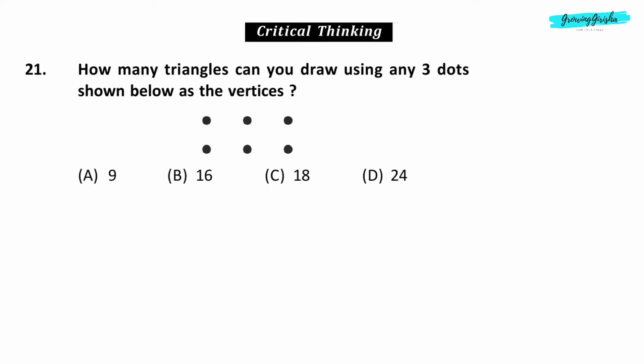Critical Thinking. Question 21. How many triangles can you draw using any three dots shown below as the vertices? Option C. 18.